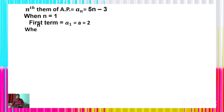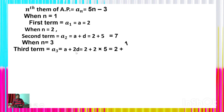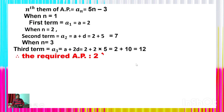When n = 1: a_1 = 2. When n = 2: a_2 = a + d = 2 + 5 = 7. When n = 3: a_3 = a + 2d = 2 + 10 = 12. Thus the required arithmetic progression is 2, 7, 12, ... This is what we had to find using the sum of n terms.